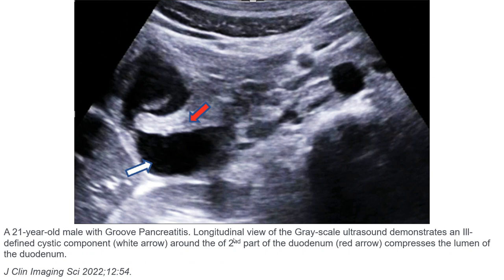In the same patient on another cross-sectional ultrasound view, an ill-defined cystic component — indicated by the arrow — is seen around the second part of the duodenum, with the red arrow showing the cystic component compressing the lumen of the duodenum.